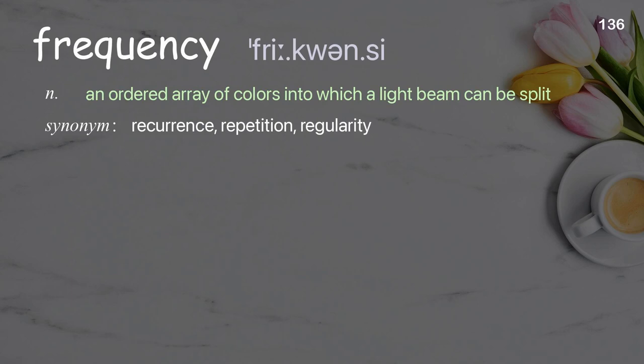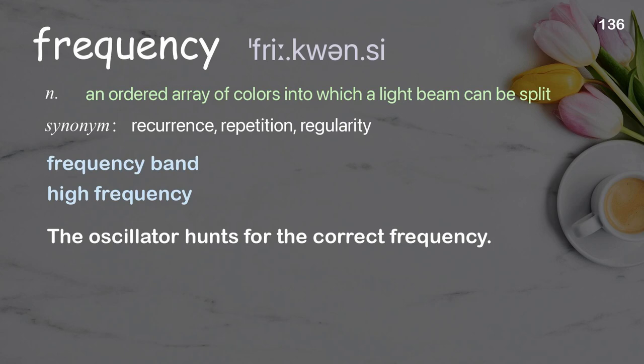Frequency: An ordered array of colors into which a light beam can be split. Examples: frequency band, high frequency. The oscillator hunts for the correct frequency.